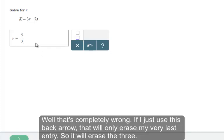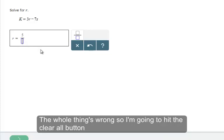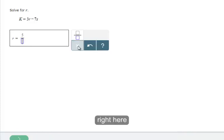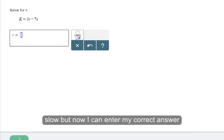Well, that's completely wrong. If I just use this back arrow, that will only erase my very last entry, so it will erase the 3. But the whole thing is wrong, so I'm going to hit the clear all button right here to get back to the start, so that now I can enter my correct answer.